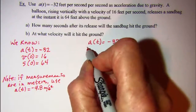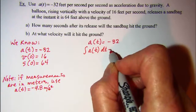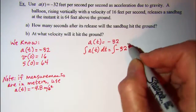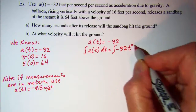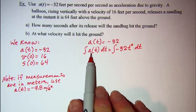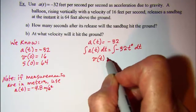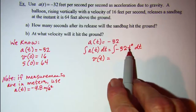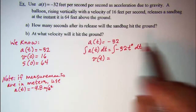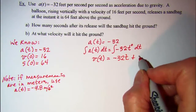When I integrate a(t), my variable is t, so I need to integrate with respect to t, and then integrate on the right side negative 32 with respect to t. The integral of a(t) is v(t). I increase the exponent by one and divide by the new exponent, so this is negative 32t to the first power plus C.